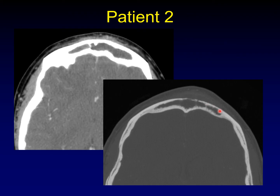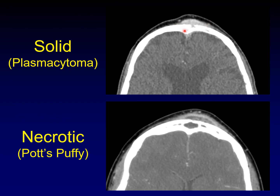The ratty appearance to the tables of the frontal sinus looks pretty similar in these two cases. The solid mass is a plasmacytoma — metastatic disease, in this case a plasmacytoma. The necrotic mass is an abscess with extensive surrounding cellulitis. This is a classic appearance of Pott's puffy tumor — an infection of the frontal sinus, an acute bacterial sinusitis that breaches through the anterior table of the frontal sinus to form a soft tissue abscess in the scalp.